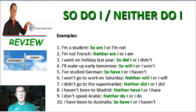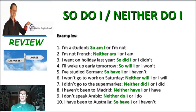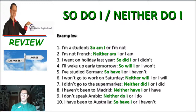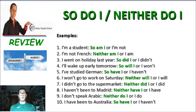Now, "so do I" when you agree with somebody, and "neither do I" when you agree with something negative. Number one: "I'm a student" — so am I / I'm not. Number two: "I'm not French" — neither am I / I am. Number three: "I went on holiday last year" — so did I / I didn't. Number four: "I'll wake up early tomorrow" — so will I / I won't. Number five: "I've studied German" — so have I / I haven't. Number six: "I won't go to work on Saturday" — neither will I / I will. Number seven: "I didn't go to the supermarket" — neither did I / I did. Number eight: "I haven't been to Madrid" — neither have I / I have. Number nine: "I don't speak Arabic" — neither do I / I do. Number ten: "I have been to Australia" — so have I / I haven't.